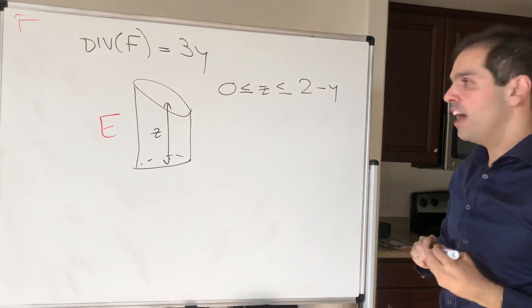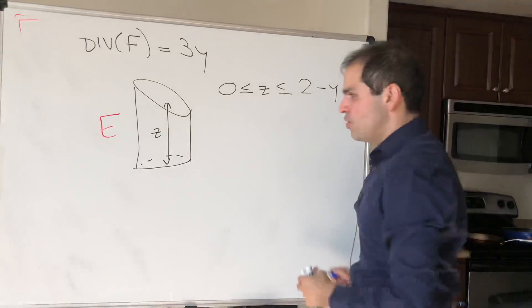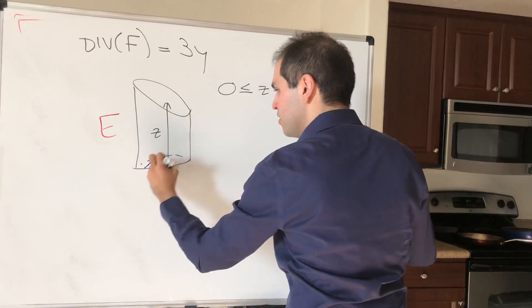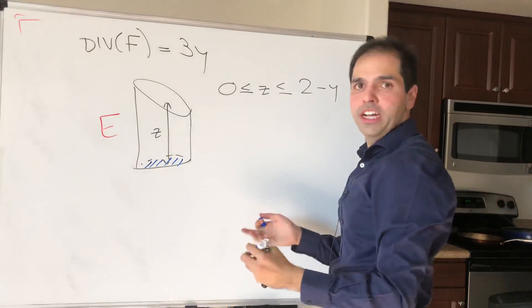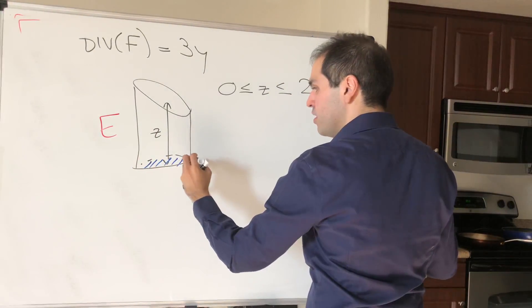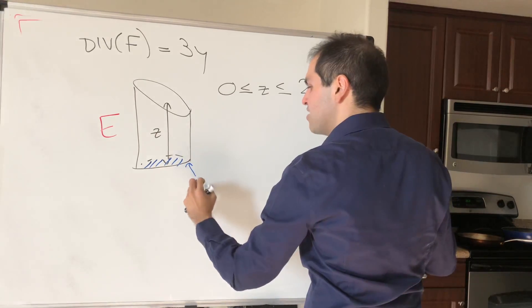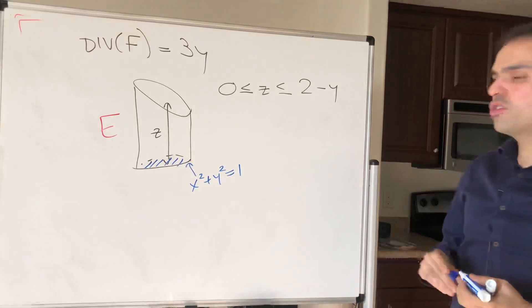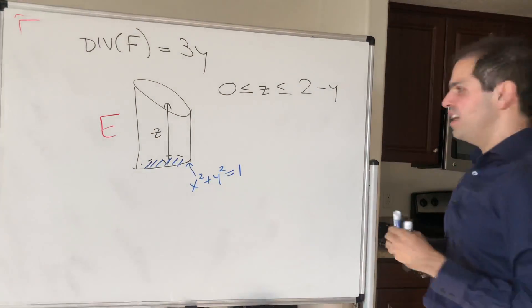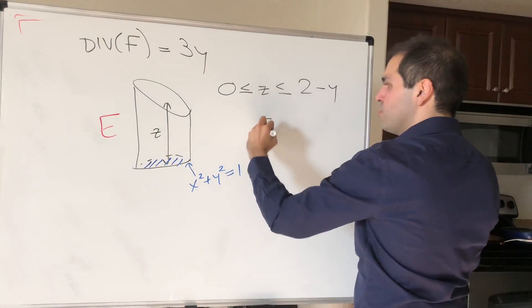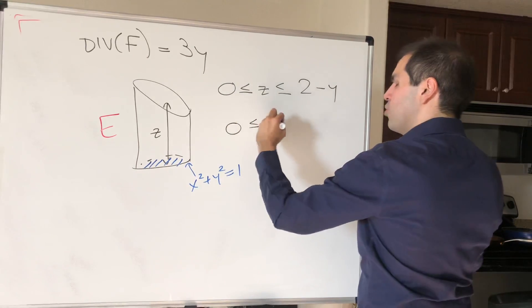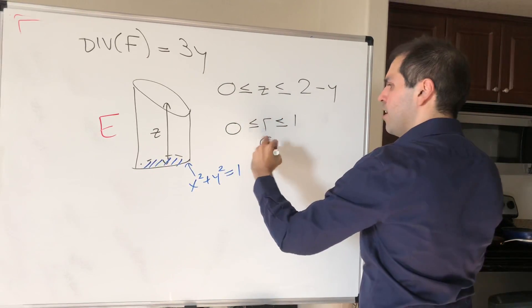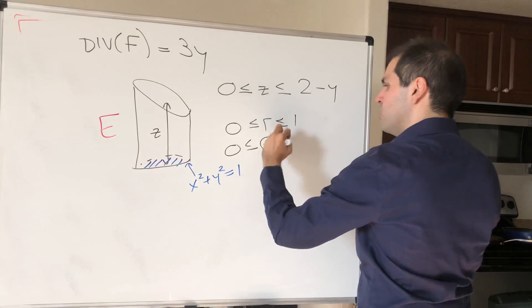And for x and y, well, notice the bottom here is just the disk, and the disk whose boundary is x squared plus y squared equals 1, so which suggests to use polar coordinates, and so the radius would just be between 0 and 1, and the angle is between 0 and 2 pi.